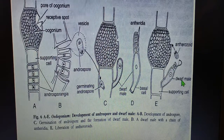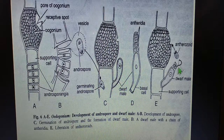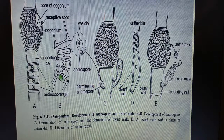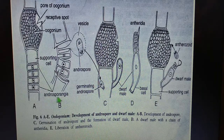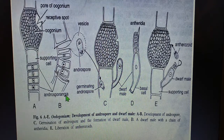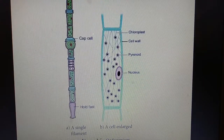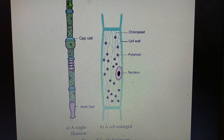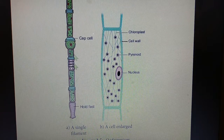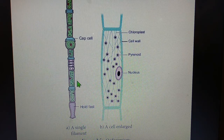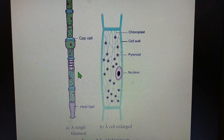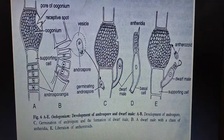The dwarf male develops from androspores, which are formed from androsporangia. Looking at the structure of Oedogonium, there is no branching or dwarf male visible initially — the dwarf male develops from the androsporangia, which produce androspores that then form the dwarf male.